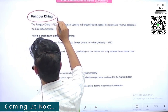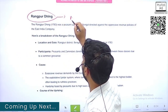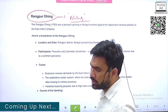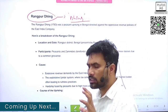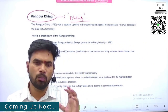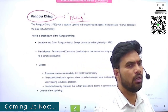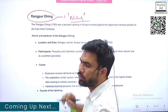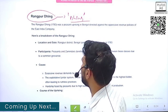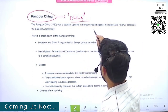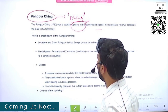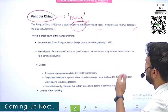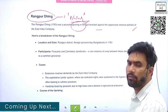Rangapur Rebellion, also known as Rangapur Dhing — try to remember the local names. Yesterday we also saw two specific names: Santal Kol and Munda Ulgulan. So try to remember these names too. The Rangapur Rebellion is directed against the oppressive revenue policies of the East India Company and happened in Bengal.